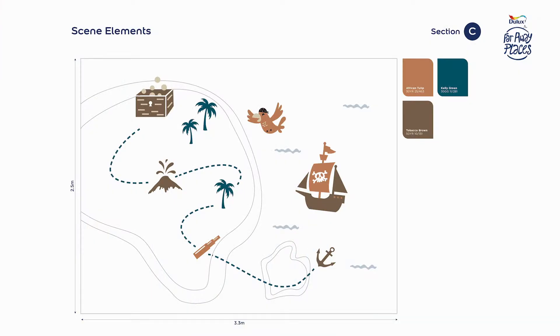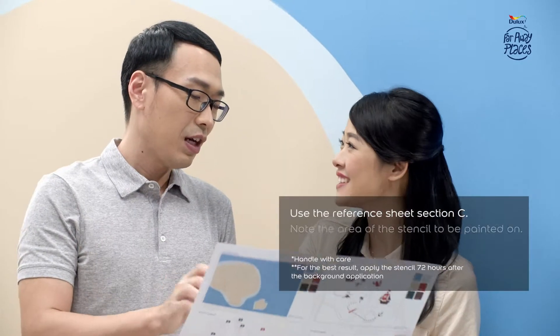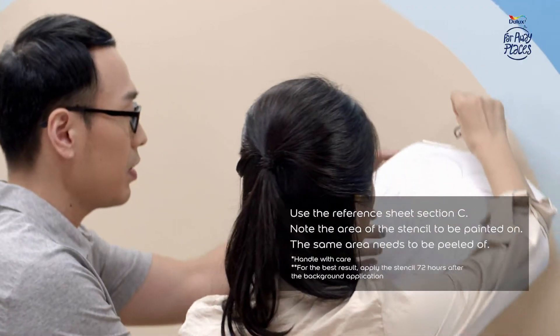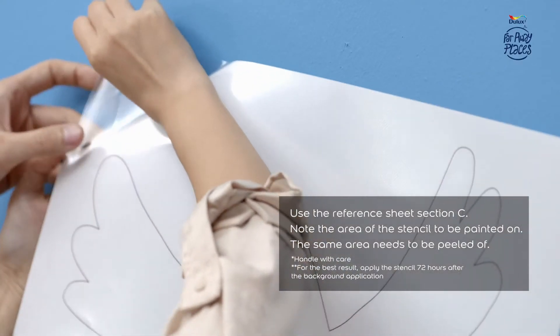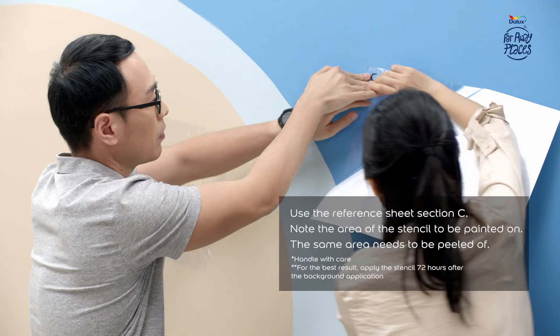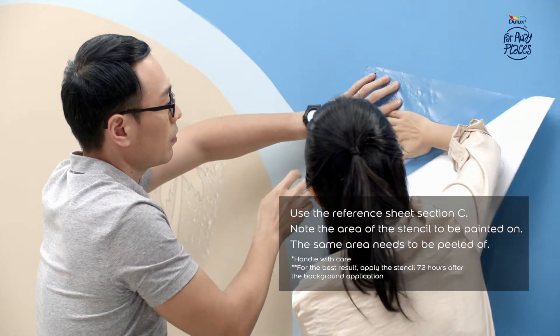Step 2 is creating the scene elements as in section C of the reference sheet. Apply the stencils for the scene elements one at a time. Firmly paste the stencil on the wall, carefully peel off the inner portion of the stencil, and repeat the process for the other stencils.